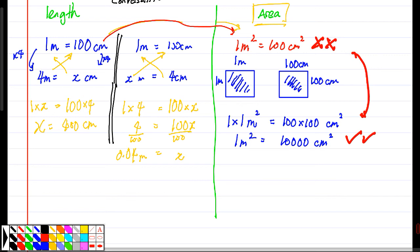Alright, so note the difference. Now in terms of converting, it's the same. For example, I have 4 cm squared, and this is how many meters squared?